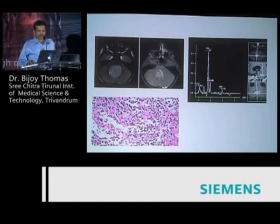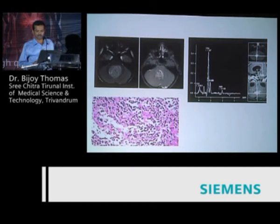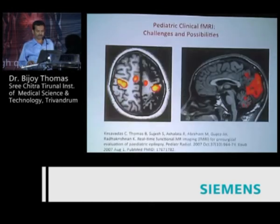For medulloblastomas, 1.5T has limitations, but the spectroscopic pattern of very high choline, almost absent NAA, and taurine at 3.4 ppm is characteristic. It may be difficult to differentiate the 3.56 myo-inositol peak from taurine at 1.5T, but at 3T you can actually differentiate these.